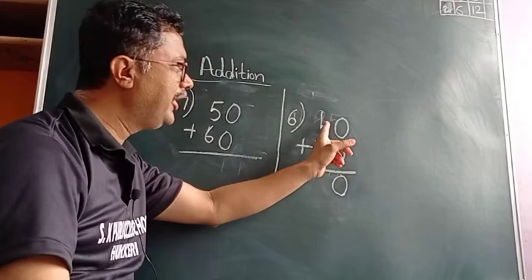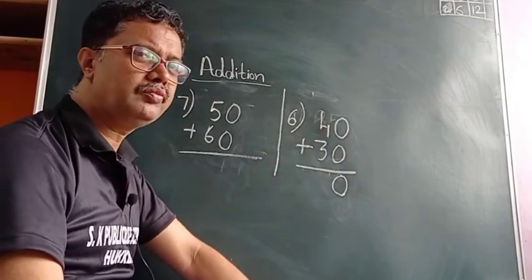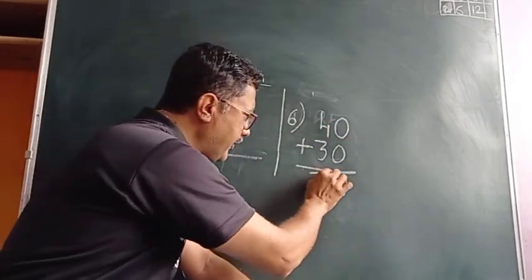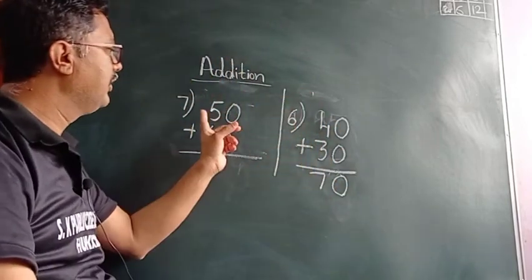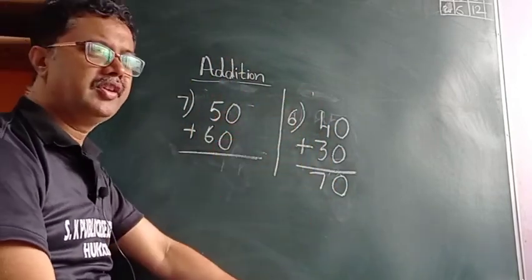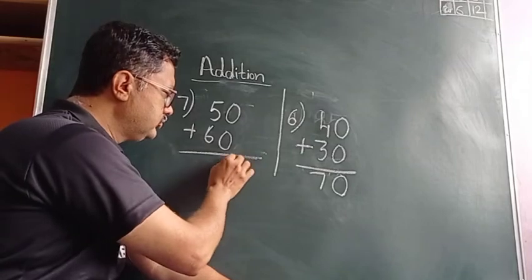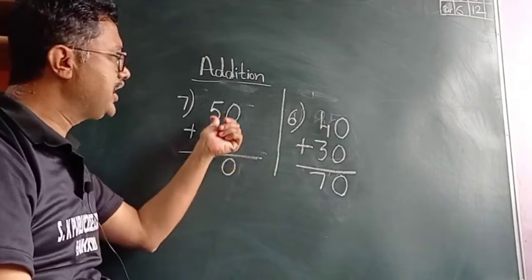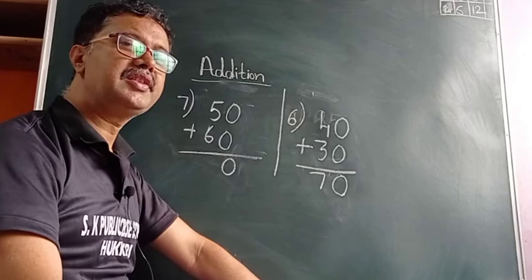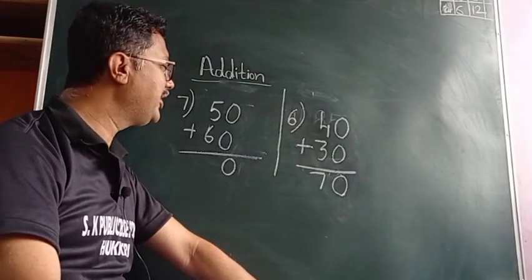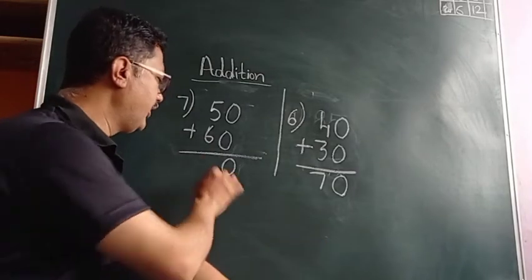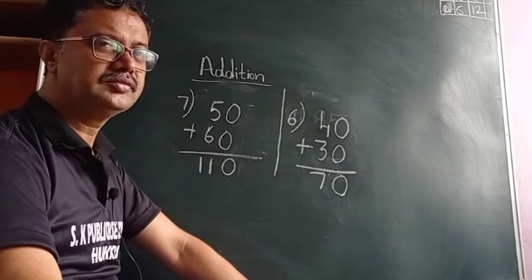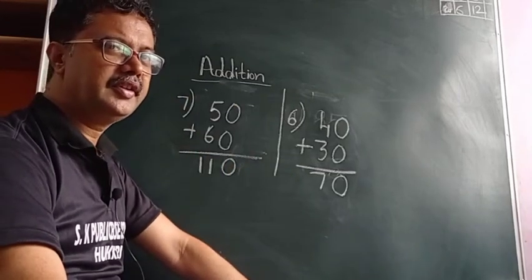Zero will come, and four plus three is equal to seven. In the same case, zero plus zero is zero. Now six plus five — how much? Very good!